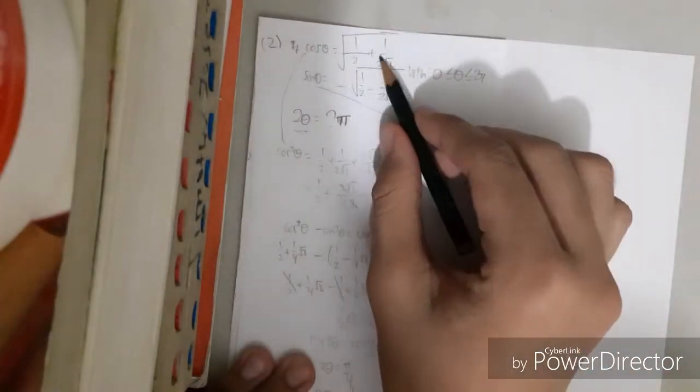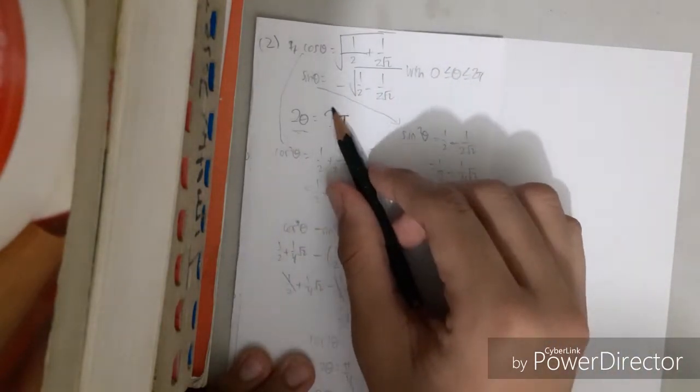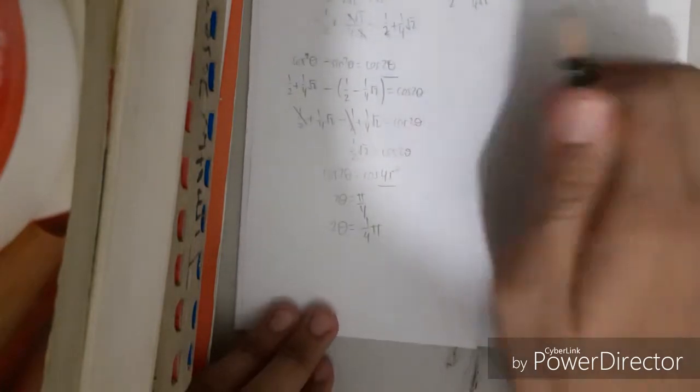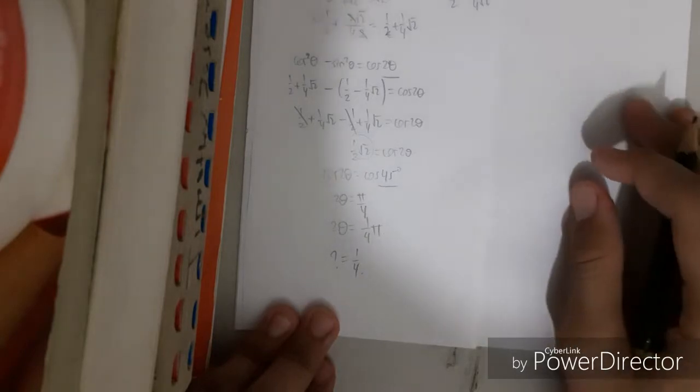So the answer to this question, where cos theta equals this one, sine theta equals this one, with this interval, is that 2 theta equals 1 fourth pi. The question mark is 1 fourth. This is number 2, and next video is number 3.